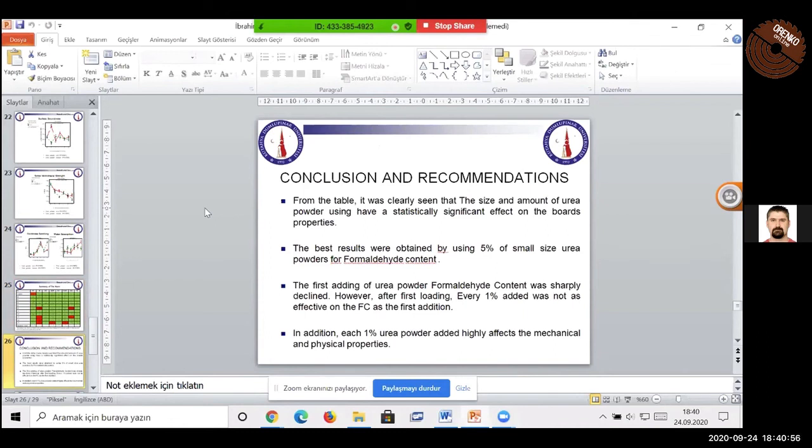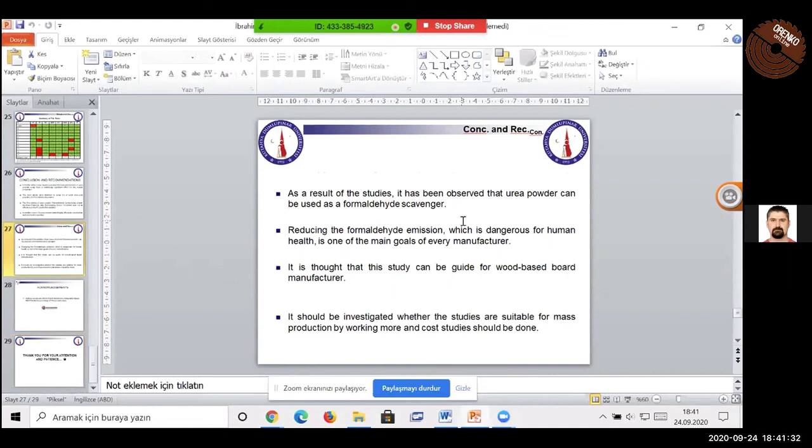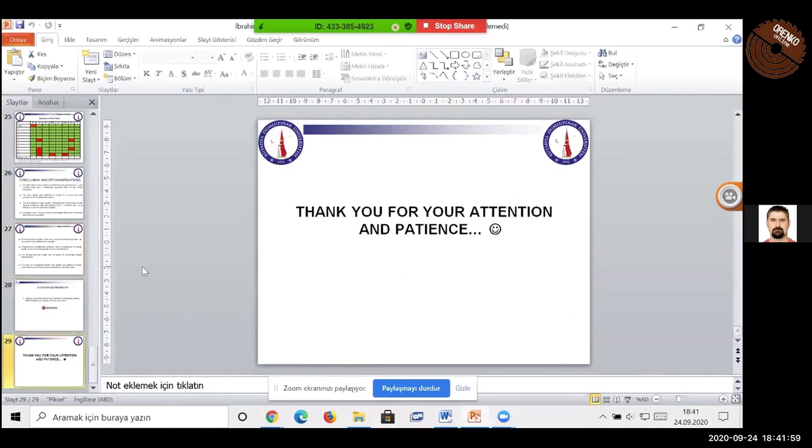The best results were obtained by using five percent of small size UREP powders for formaldehyde content. The first adding of UREP powders for formaldehyde content was sharply declined. However, after first loading, every one percent added was not as effective on the formaldehyde content as the first addition. In addition, each one percent UREP powders added highly affects the mechanical and physical properties. As a result of the study, it has been observed that UREP powders can be used as a formaldehyde scavenger. Reducing the formaldehyde emission, which is dangerous for human health, is one of the main goals of every manufacturer. It is thought that this study can be quite useful for wood-based board manufacturers. It should be investigated whether the studies are suitable for mass production by working more, and cost studies should be done. Thank you for your attention and patience.